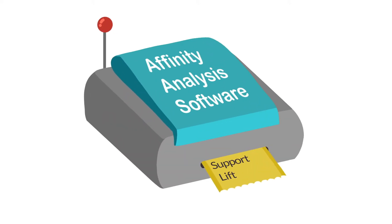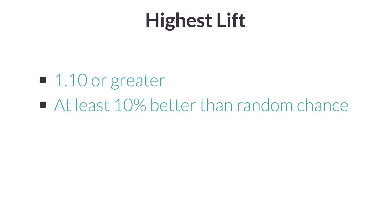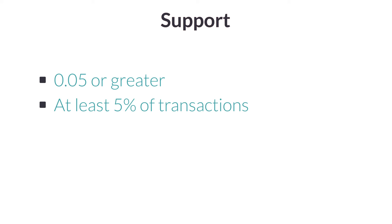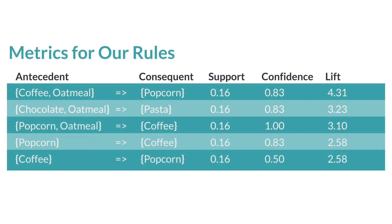Now let's tie it all together. Our software gives you all three measures as output and we can choose the rules to implement. Generally, we want to pick the rules with the highest lift — we'd recommend 1.10 or greater for at least 10% better than random chance — enough support (0.05 or greater, meaning at least 5% of transactions), and higher confidence (higher is better, one is best). The table shows all our rules with their support, confidence, and lift, sorted so the best ones are at the top.